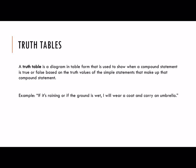Here's an example: if it's raining or if the ground is wet, I will wear a coat and carry an umbrella. There are lots of options. We have different pieces here: it's raining, the ground is wet, I will wear a coat, and carry an umbrella. We're going to name each of those simple statements with a letter — P, Q, R, and S — just like in algebra you would use X, Y, and Z as common variables.